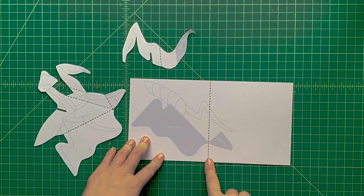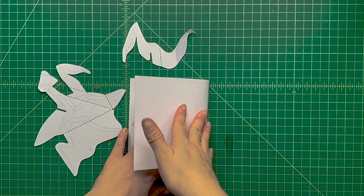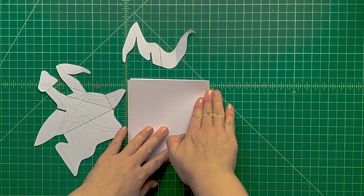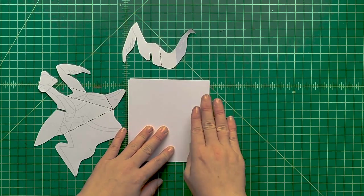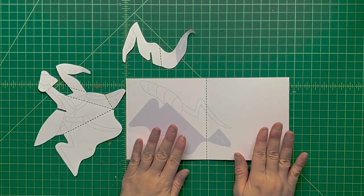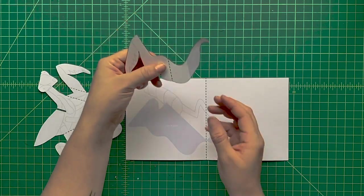Now we're going to pre-fold all of our pop-ups. Since we've scored everything, it should be really easy to fold along all those dotted lines. This main piece folds just like that. Take this small piece and fold it right here.